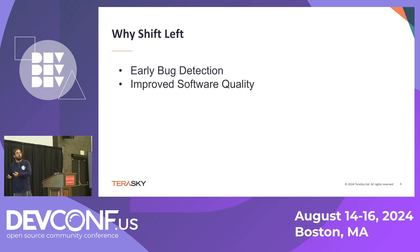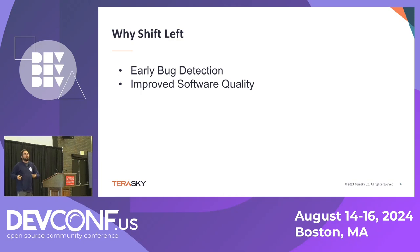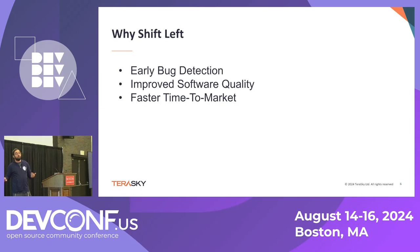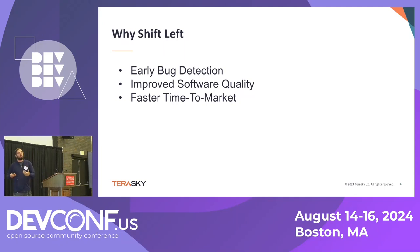Another reason was to improve software quality — the quicker we test, the more we add security earlier on, the better software we build, and we don't end up just doing hacky patches to get things out the door. Faster time to market was also one of the claims behind shift left, though many times it's actually a fallacy. The idea was that catching things earlier means less context switching and we can release software at a faster pace.